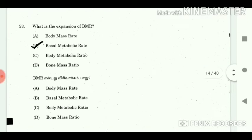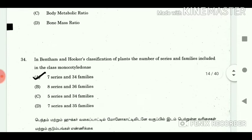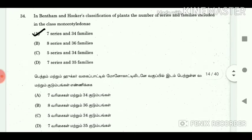33. What is the expansion of BMR? Answer: Basal Metabolic Rate. 34. In Bentham and Hooker's classification of plants, the number of series and families included in the class Monocotyledoneae? Answer: 7 series and 34 families.